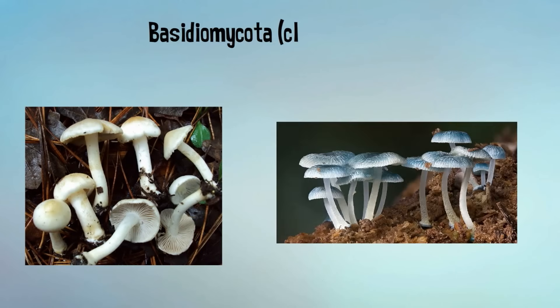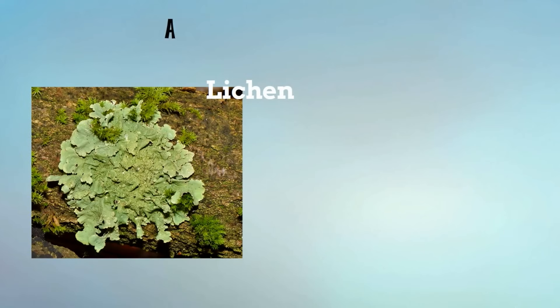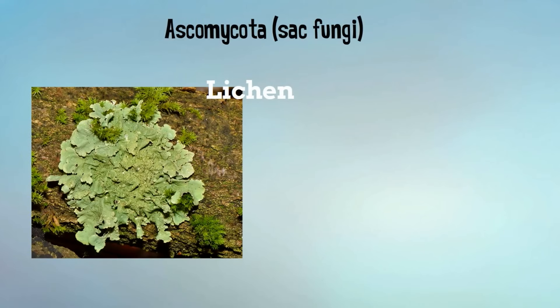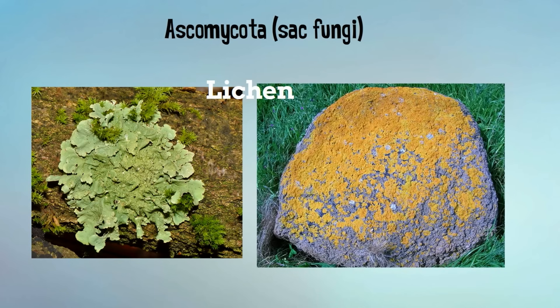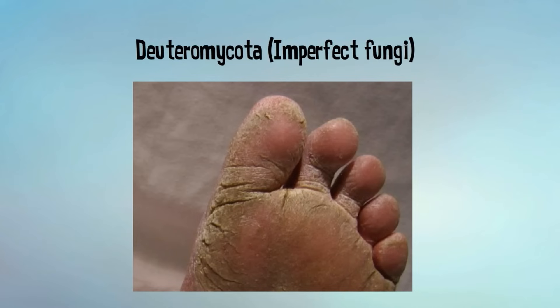Next are club fungi, which have a dome-shaped part where reproductive spores are produced. Common examples are mushrooms. Next are sac fungi, which produce reproductive spores in a sac-like structure. Common examples include yeast, mildew, and lichen. Finally, you have the imperfect fungi — the junk drawer of fungi, where fungi that don't fit anywhere else go. Each of these fungi reproduce asexually. Athlete's foot is an example.